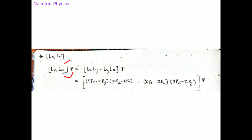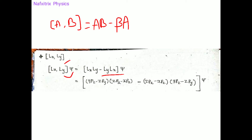We know that the commutator [A, B] is nothing but AB minus BA. Here, in the place of A we have Lx and in the place of B we have Ly, so we get (Lx·Ly minus Ly·Lx) acting on psi.